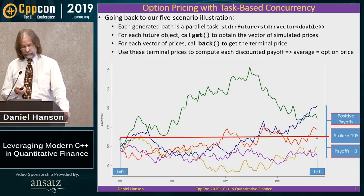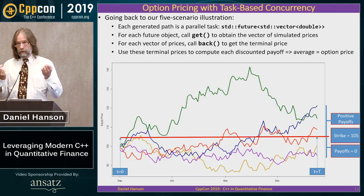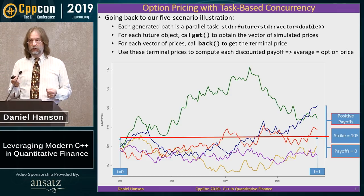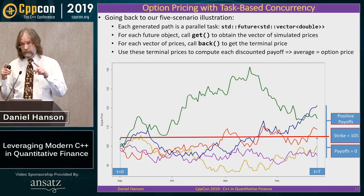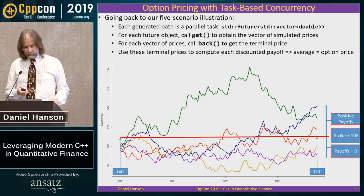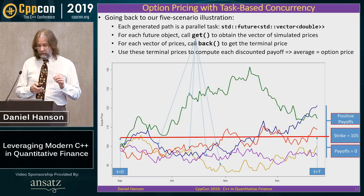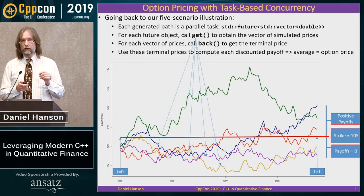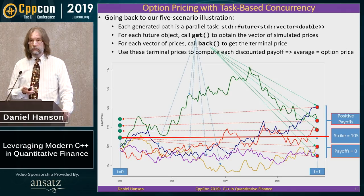Going back to our five-scenario example: each generated path is a vector of prices. To generate in parallel, we do that as a task managed by a future object. The future manages creation of that vector, with the vector in the template parameter. When done, we call get, which returns each of those individual vectors of random scenarios. For a European option, all we care about is that last price, so we just call back on the vector returned from the future object. Then, like before, we discount these back and take the average to get the price.